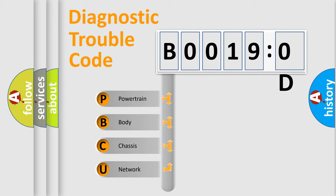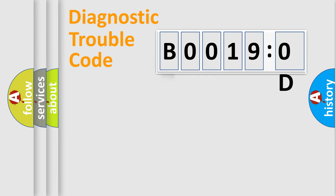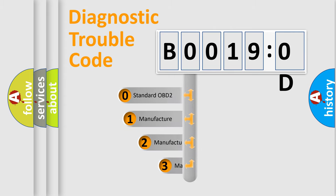We divide the electric system of automobile into four basic units: Powertrain, Body, Chassis, and Network. This distribution is defined in the first character code.